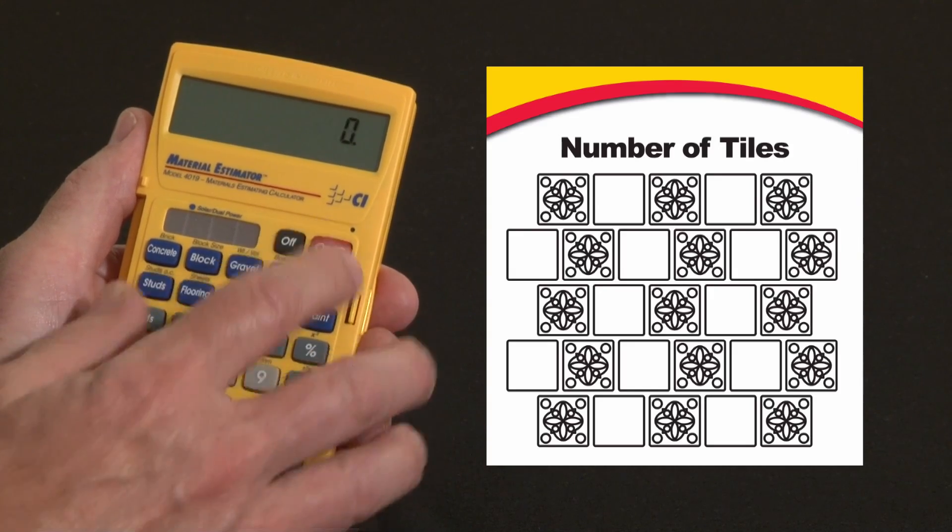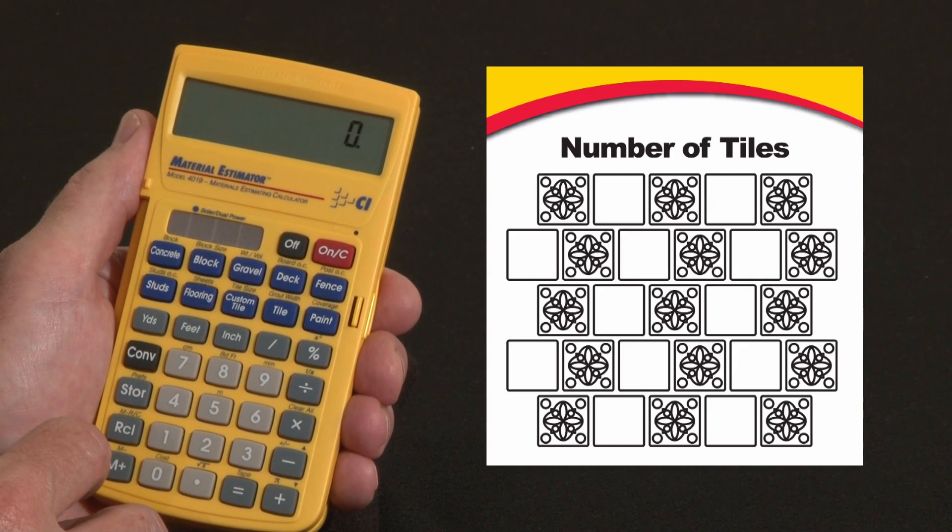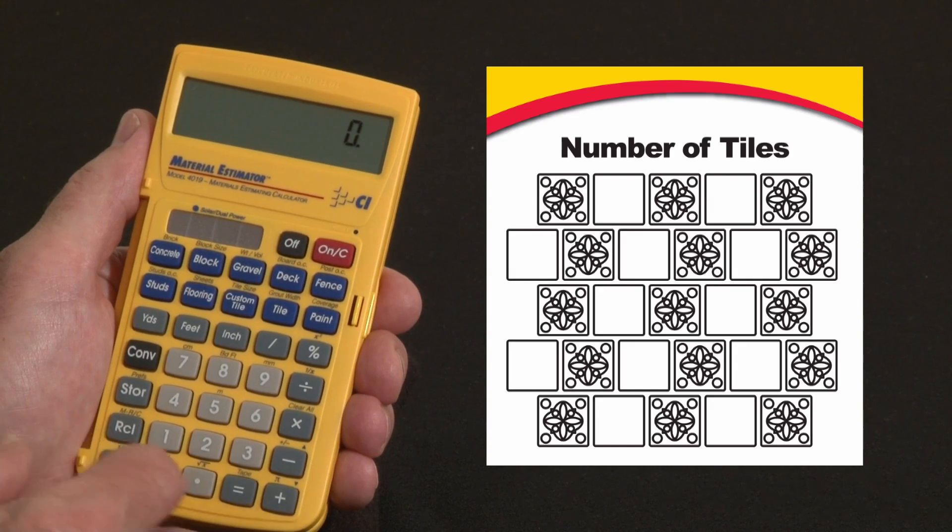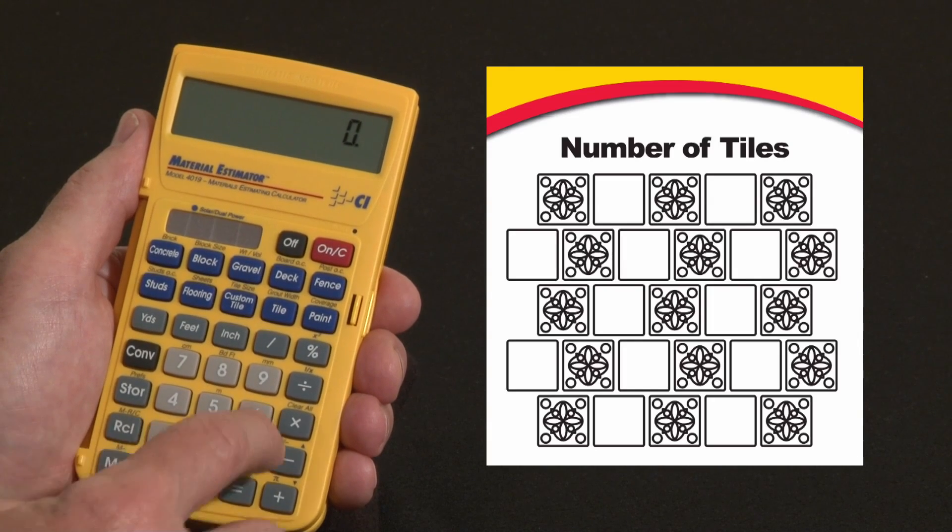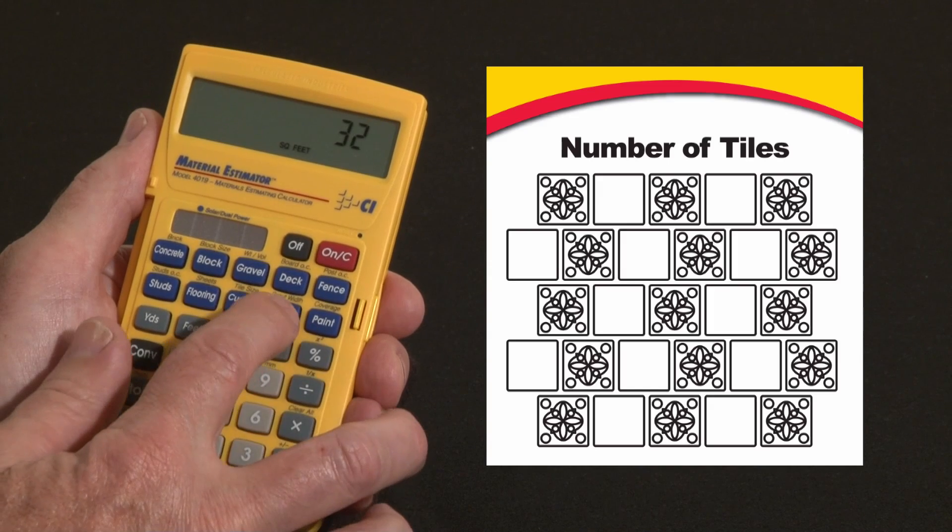Now if the situation were different and I had a square foot area, maybe for a countertop or a floor or a backsplash, I'd want to first enter in that square footage. Say it's 32 square feet on top of a counter—so 32 feet feet—and now I just hit the tile key.